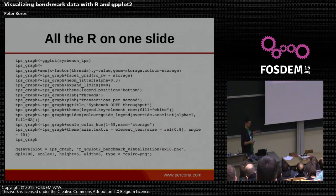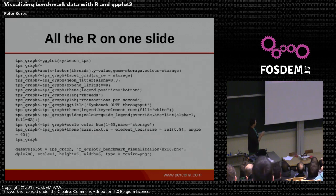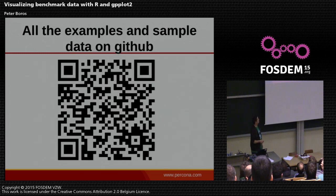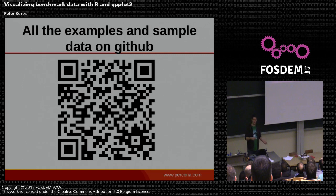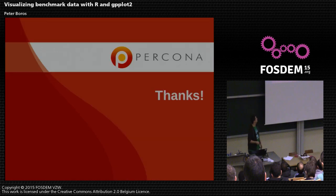All the R code on one slide. To generate that graph, the R code is just this — built up step by step. This goes to my GitHub repo where all the examples are there, and all the sample data as well. The sample data is from a recent benchmark, and the customer was kind enough that I could use it in this talk.